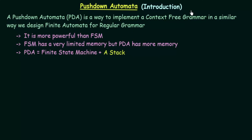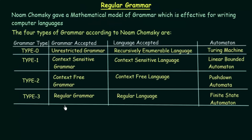In this lecture, we will be starting with a new topic which is Pushdown Automata. A Pushdown Automata, also known as PDA, is a way to implement a context-free grammar in a similar way we design Finite Automata for regular grammar. When we studied the types of grammar, we were discussing about regular grammar and regular languages, which we have already covered in this lecture series. Regular grammar can be designed using Finite State Automaton, or FSM.